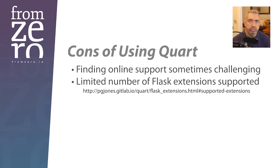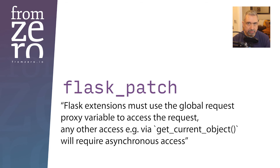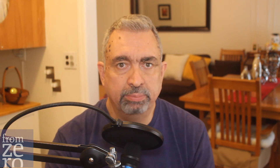According to the Quart documentation, you can use extensions that are not in that list using a function called flask_patch, but in order for them to work, Flask extensions must use the global request proxy variable to access the request. Any other access, e.g. via get_current_object, will require a synchronous access. The documentation also says the Flask extension must be limited to creating routes using the request and rendering templates. Any other more advanced functionality may not work. So using existing Flask extensions will be very limited and you will need to do heavy testing before intending to use them with Quart.